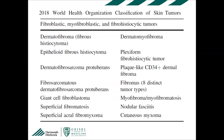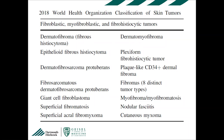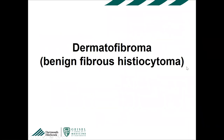I have no conflicts of interest. The WHO classification of skin tumors — back in 2018 — includes a number of fibroblastic, myofibroblastic, and fibrohistiocytic tumors: dermatofibroma, epithelioid fibrous histiocytoma, DFSP, giant cell fibroblastoma, myofibroma, and others. Obviously I don't have time to talk about all of these in 45 minutes, and there are even more if you include the 2020 soft tissue WHO.